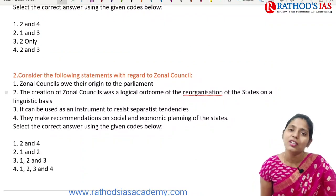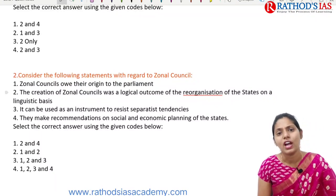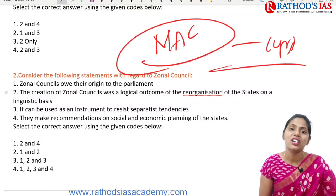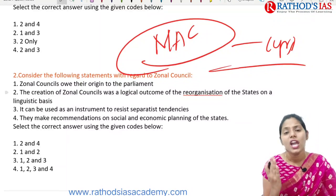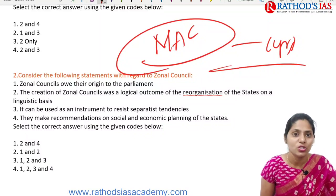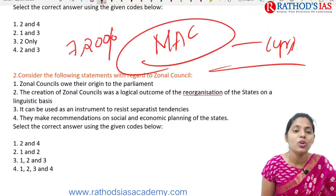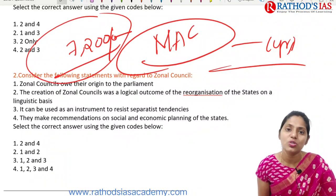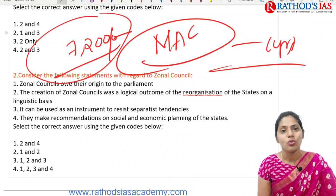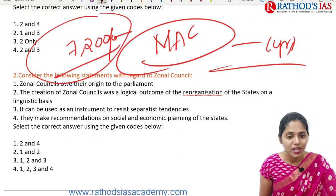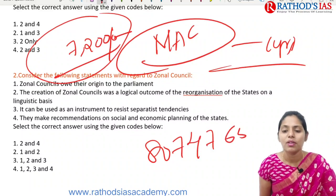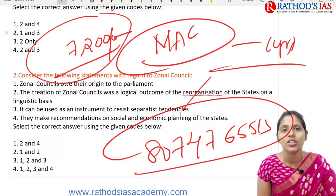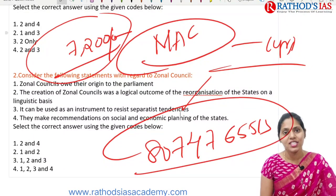Rathor's IAS has come up with an answer writing course — a one-year course focusing on General Studies along with current affairs, GS2, GS3, essay, and case study. The cost is ₹7,200 for one year. There is also a foundational course for GS. Course details are available on the website. You can message or call on 8074765510. For the PDF of this class, join the Telegram channel — the link is in the description box.